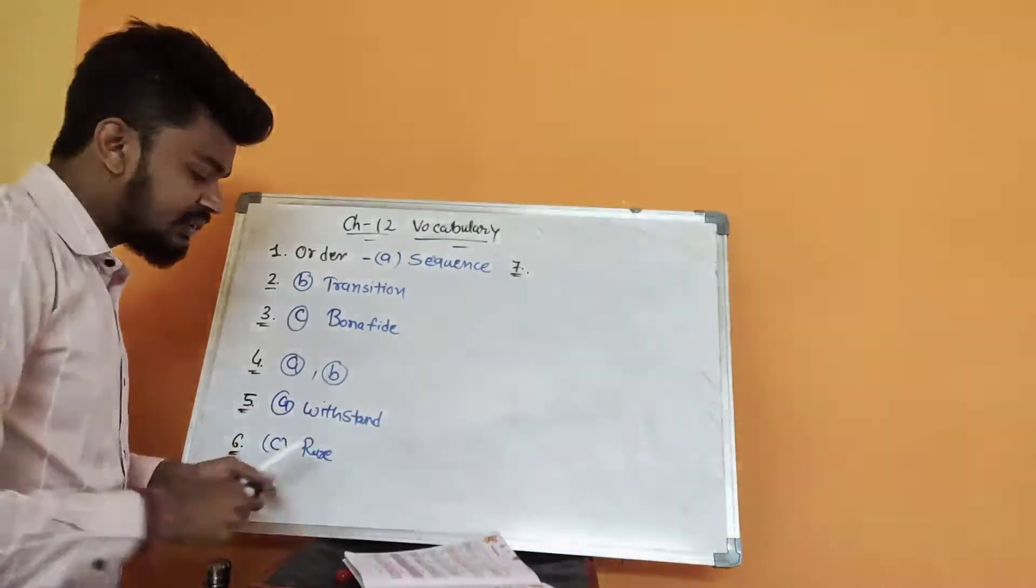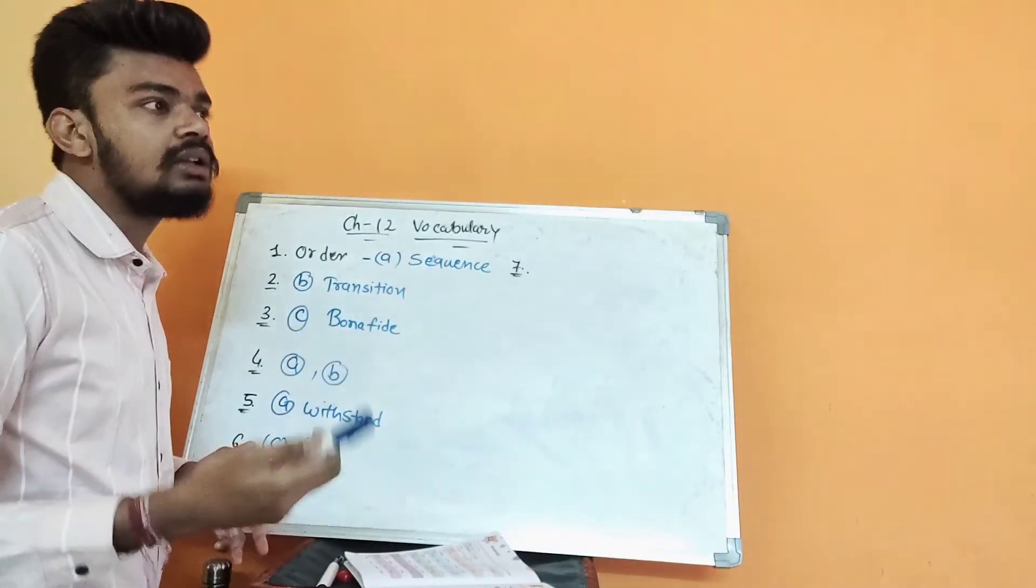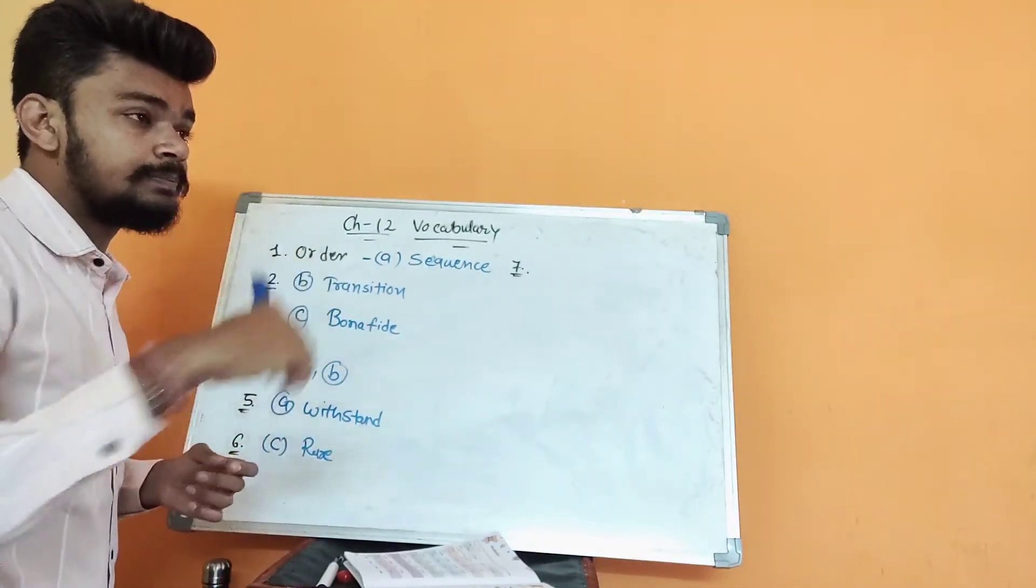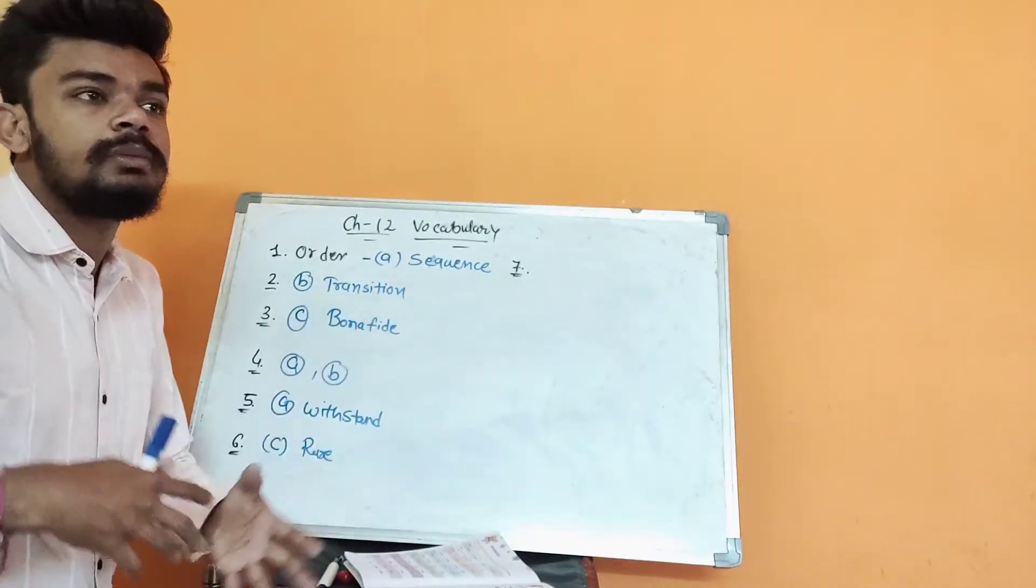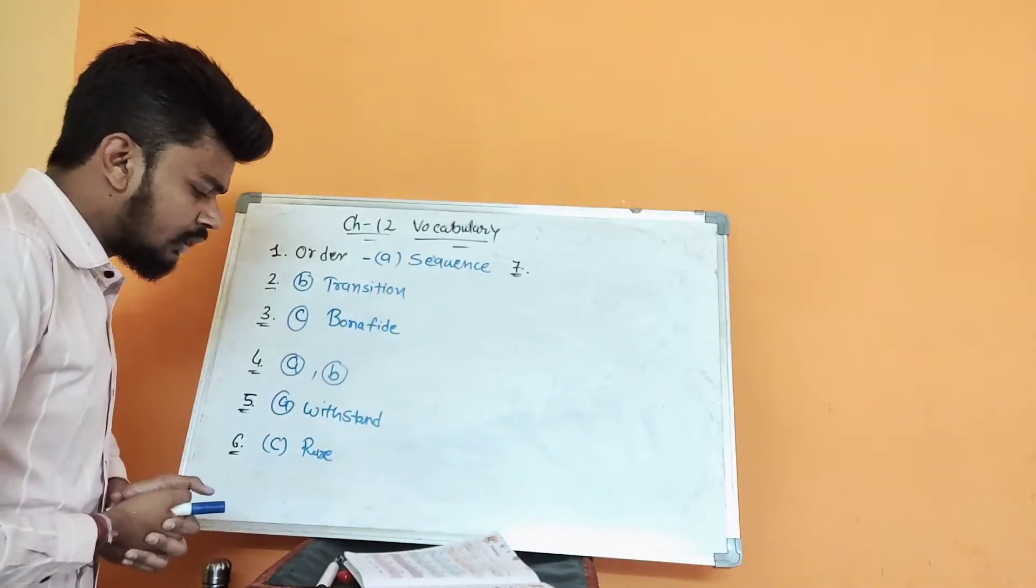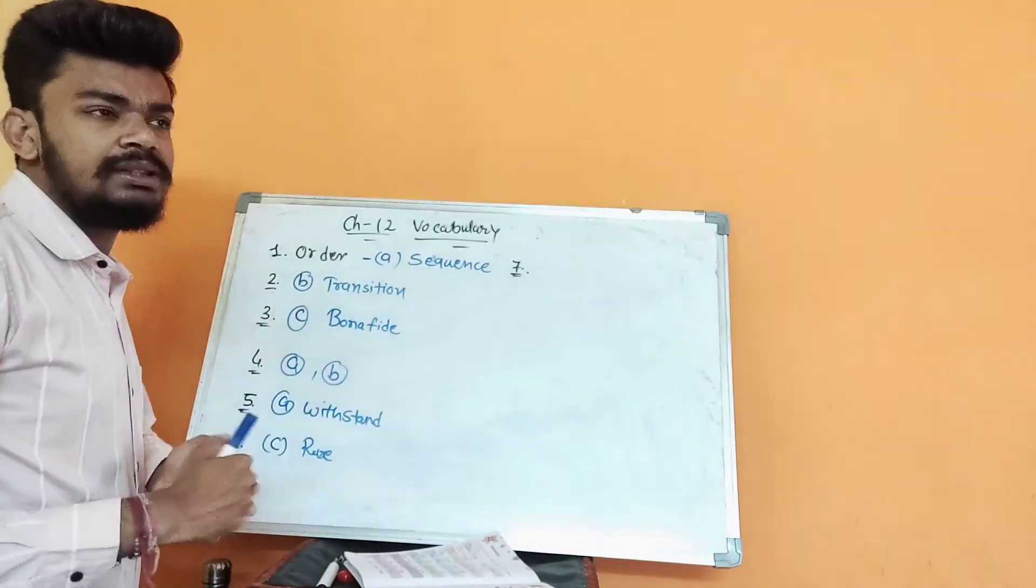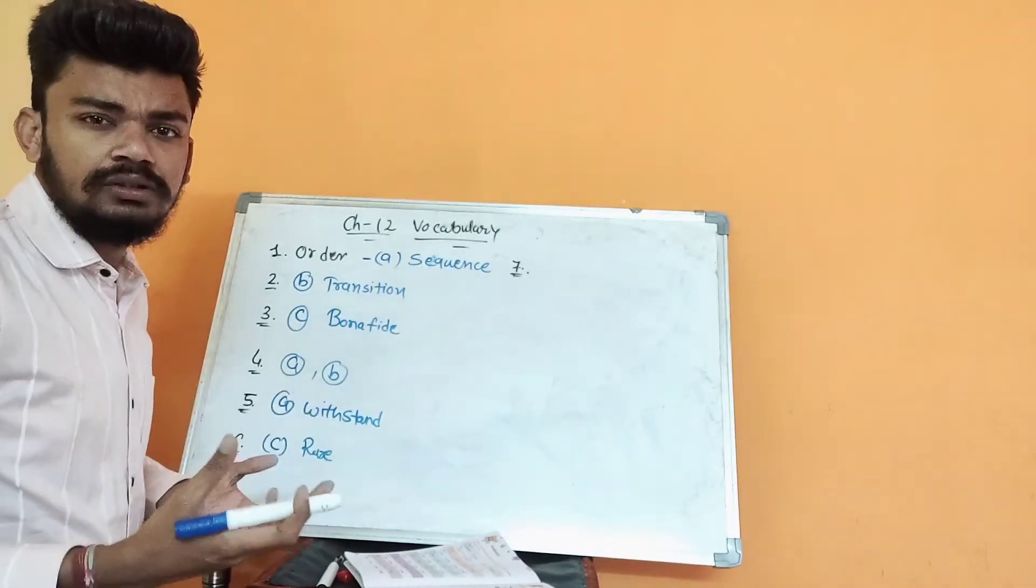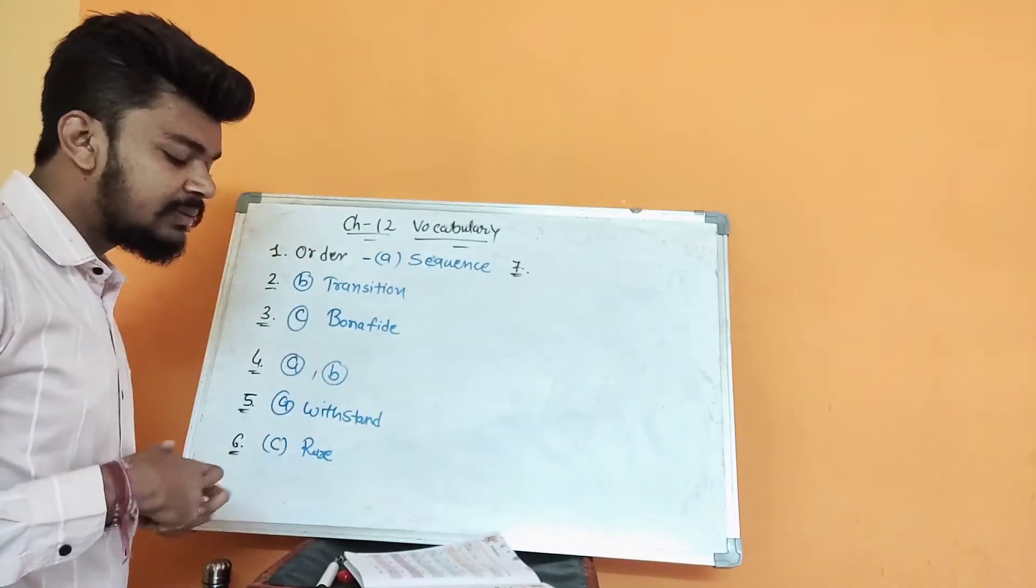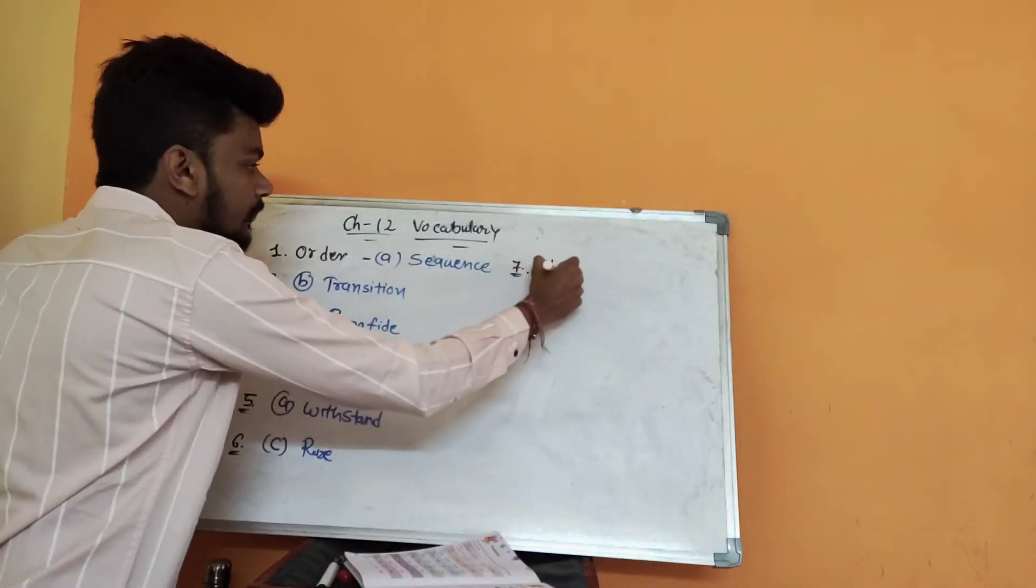Question number seven: zest. Zest is a kind of thing, if we take that then we got the energy. Option A, not. B, energy, yes. C, anxiety means a feeling of worry or fear. Satisfied also cannot become. The best closest meaning is B, energy.